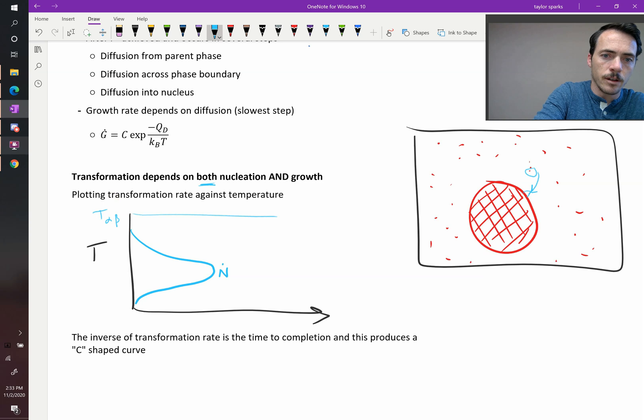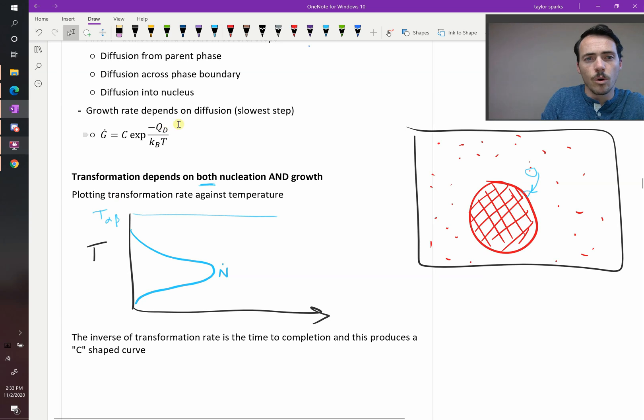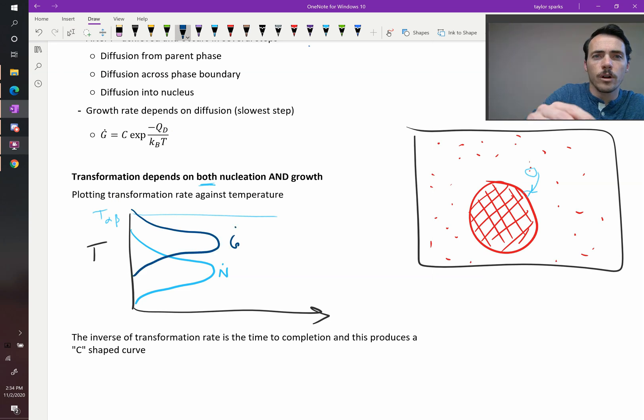First off we have our nucleation rate, it's going to be down here, N dot. Now our growth rate, it only depends on this diffusion one, so it's going to be at higher temperatures. And then the overall transformation is going to be the product of these two, so that will be our overall T dot, our transformation rate.